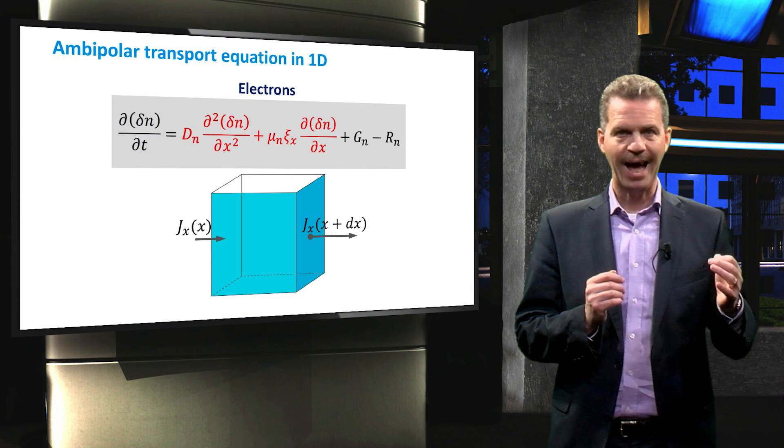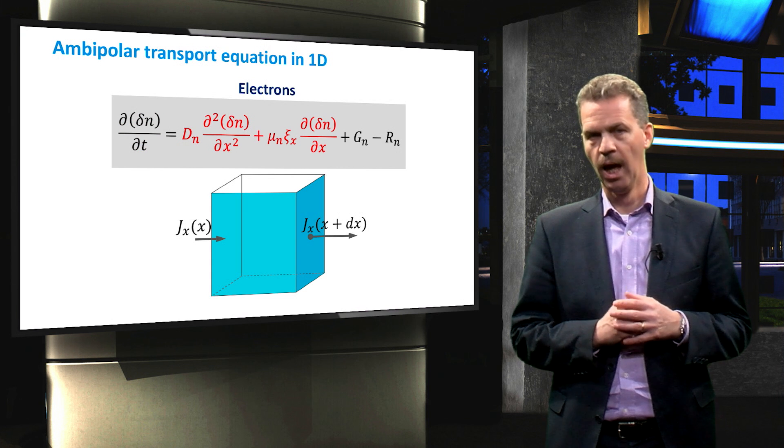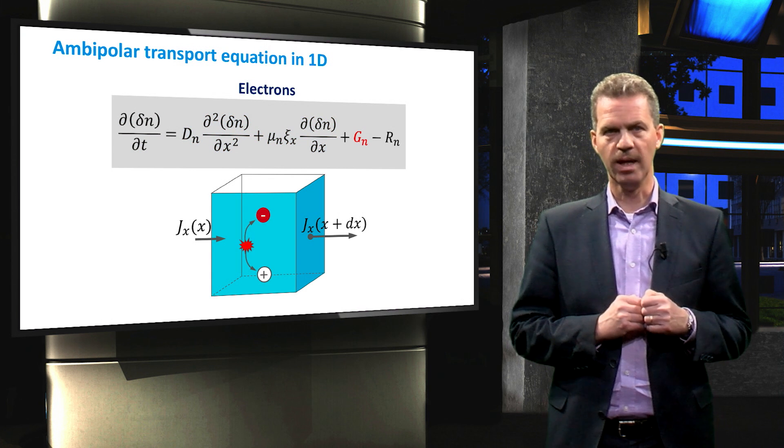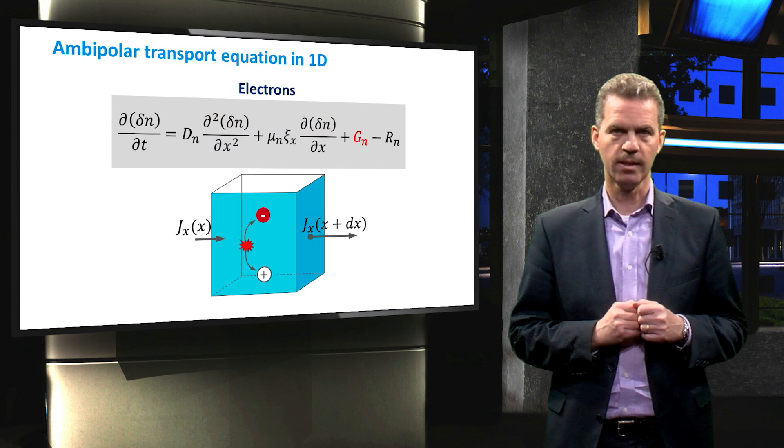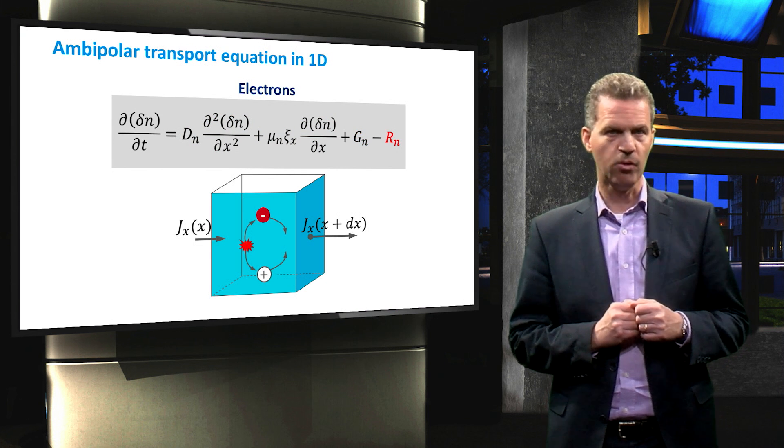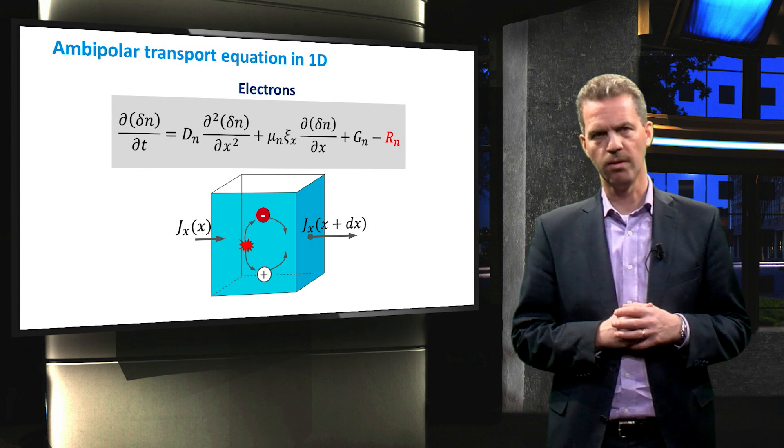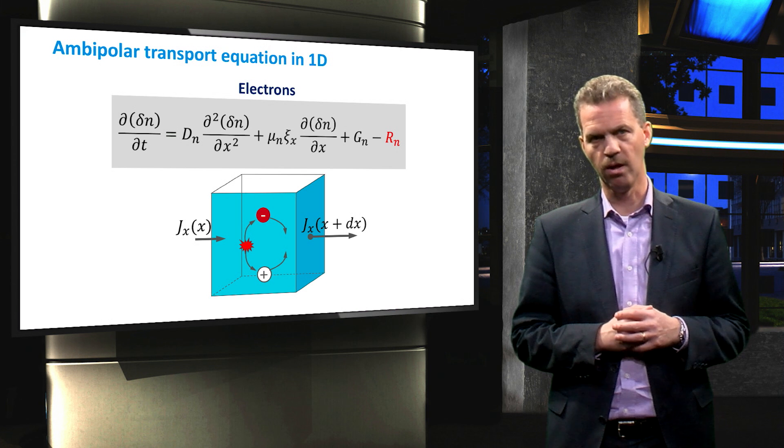Charge is flowing in and out of this volume element by drift and diffusion. Inside the volume element, charge is generated, and charge is also recombining. This rather complex formula is derived in the solar energy book, and for more information I refer you to chapter 6.5 of the book.